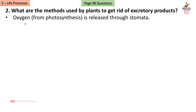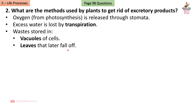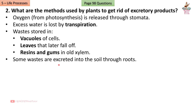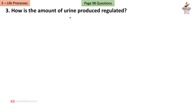Question 2: What are the methods used by plants to get rid of excretory products? Answer: Oxygen from photosynthesis is released through stomata. Excess water is lost by transpiration. Waste is stored in vacuoles of cells and in leaves that later fall off. Resins and gums are stored in old xylem. Some wastes are excreted into the soil through roots.